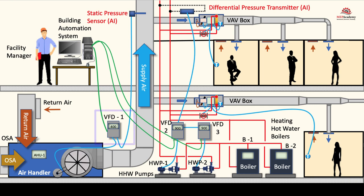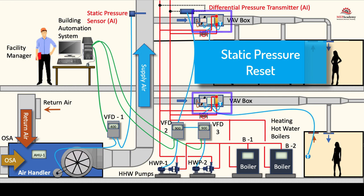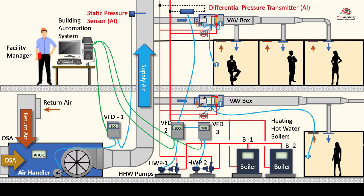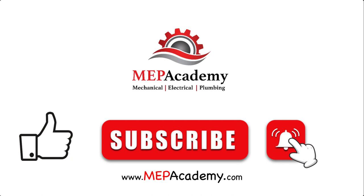There is a variation of the fixed static pressure set point strategy that uses resetting of the static pressure set point based on the feedback of terminal damper positions. By utilizing a static pressure sensor in conjunction with fan control systems, HVAC systems can maintain the desired static pressure levels or reset levels, optimize airflow, and ensure efficient operation. This control mechanism helps balance air distribution, control temperature differentials, and improve energy efficiency in HVAC applications. If you liked this video, please give it a thumbs up and subscribe to our channel. Thank you.